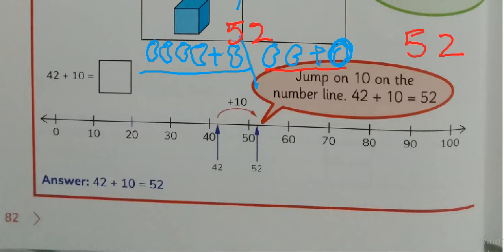Now, here is addition with number line. It is 42. The number you have is 42. You have to make 10 little jumps. One, two, three, four, five, six, seven, eight, nine, ten. Ten little jumps and then you will reach on 52.